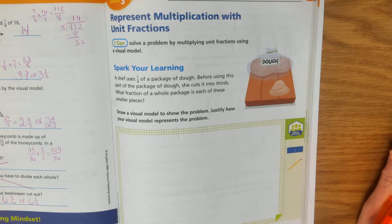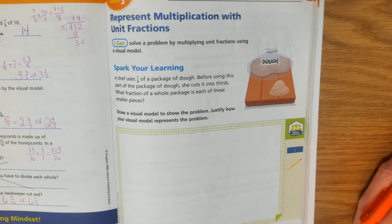A chef uses one-fourth of a package of dough. Before using this part of the package, she cuts it into thirds. What fraction of a whole package is each of these smaller pieces? Draw a visual model to show the problem and justify how your visual model represents the problem.